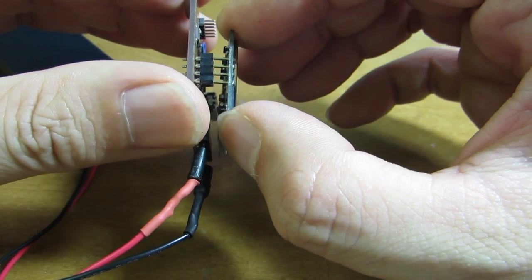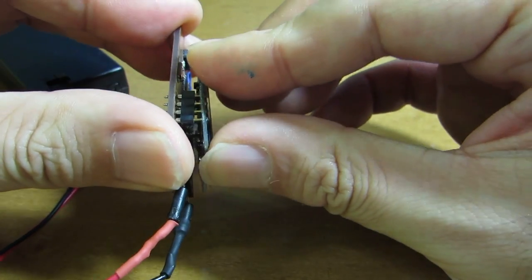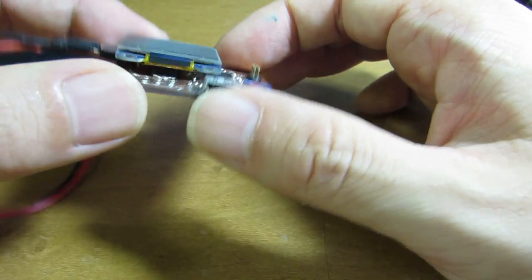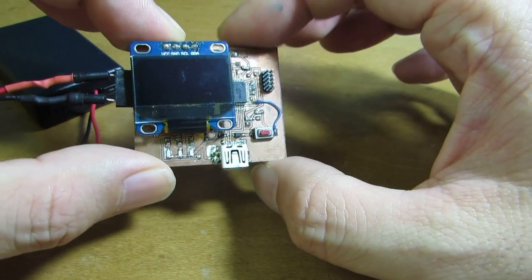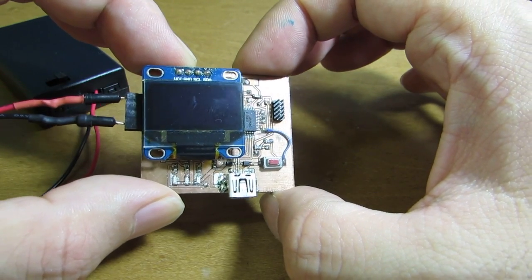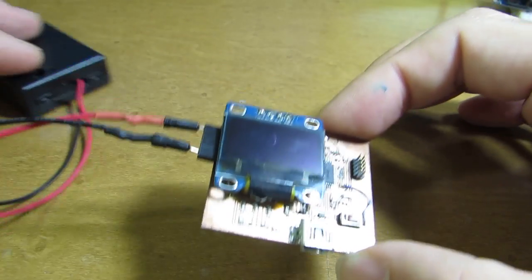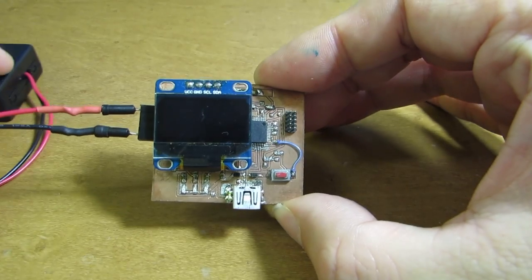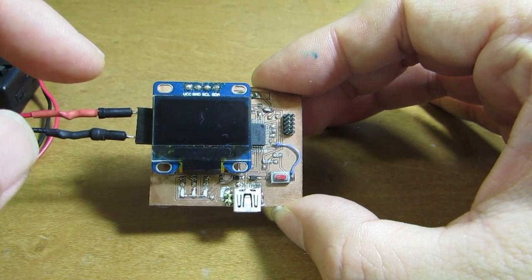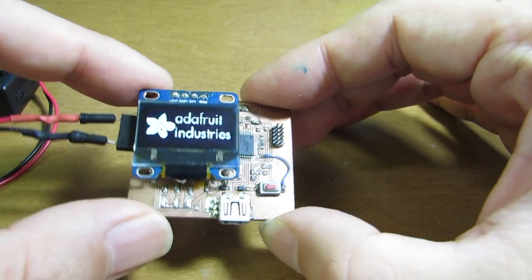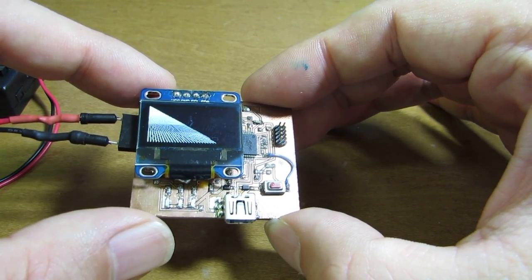In the case of this board, the binary can be uploaded through the USB interface because this is Arduino Zero full compatible. Now I already uploaded the binary and applied the voltage. You will see the driving OLED.